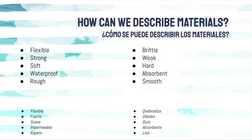We can describe materials in many different ways. For example, we can describe a material as flexible, or very bendy, strong, soft, waterproof, or rough.